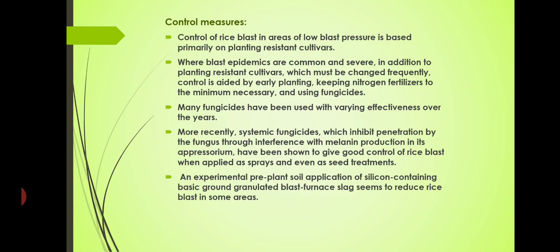An experimental pre-plant soil application — that is before plantation or sowing of rice seedlings — involves treating the land with silicon-containing basic ground granulated blast furnace slag, collected from silicon furnaces, to reduce rice blast in some areas. These are the control measures of blast disease of paddy. It is considered a very serious disease that may lead to famine, because it infects the staple food of our country.